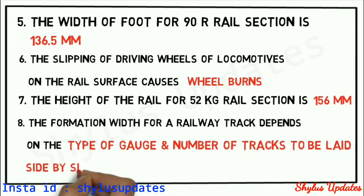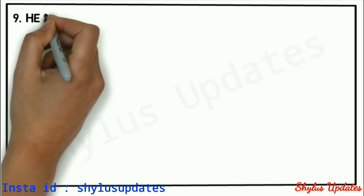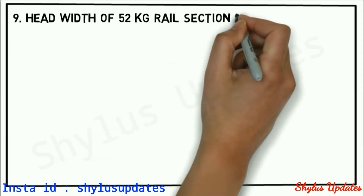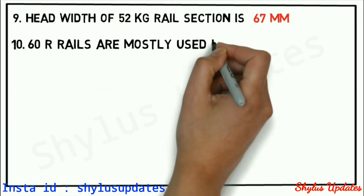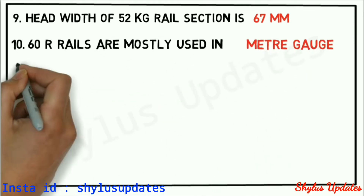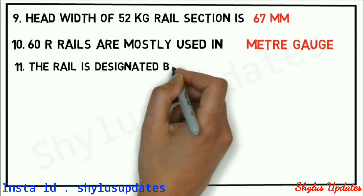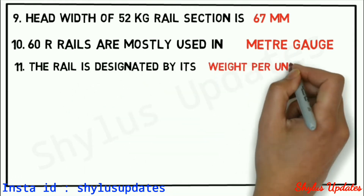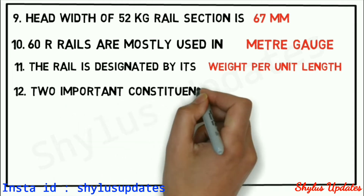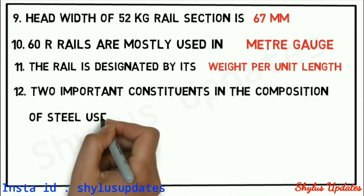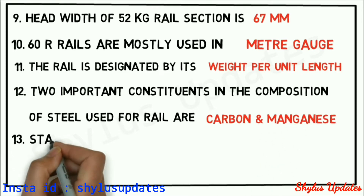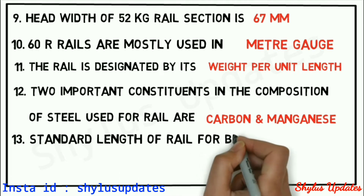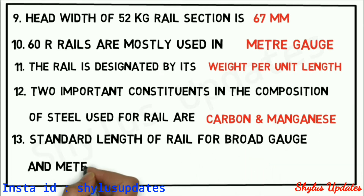The head width of 52 kg rail section is 67 mm. 60 kg rails are mostly used in meter gauge. The rail is designated by its weight per unit length. Two important constituents in the composition of steel used for rail are carbon and manganese.